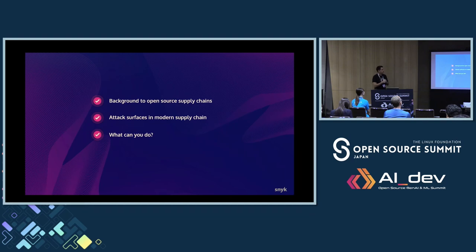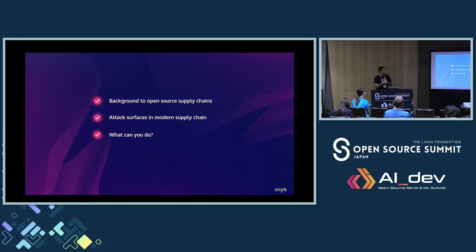I'll give you some background on why we're even having this conversation — the shortcomings of using open source and other third-party dependencies in your application, what the risks are, the different attack surfaces in your entire pipeline in supply chain attacks, and then what you can do to implement some of these techniques to hopefully avoid some of the attacks.